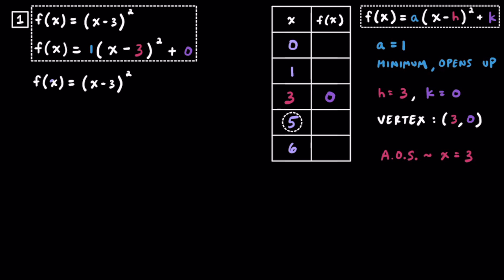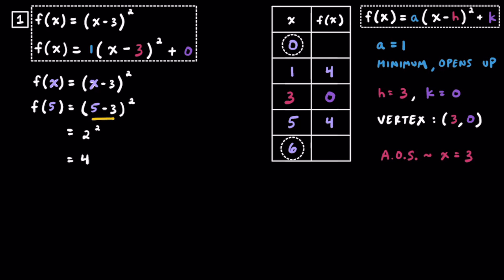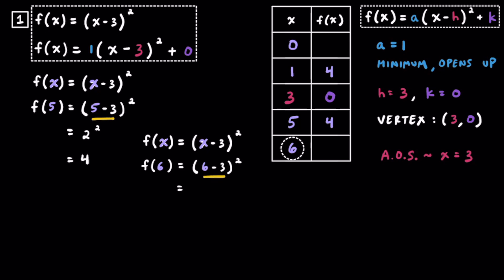Going back to the original function and substituting 5 in for x: following the order of operations, 5 minus 3 equals 2, so we have 2 squared which equals 4. So when x is equal to 5, f of x is equal to 4, and by symmetry when x is equal to 1, f of 1 also equals 4. Now substituting 6 in for x: 6 minus 3 is 3, so we have 3 squared which equals 9. So when x equals 6, f of x equals 9, and by symmetry that matches when x equals 0.